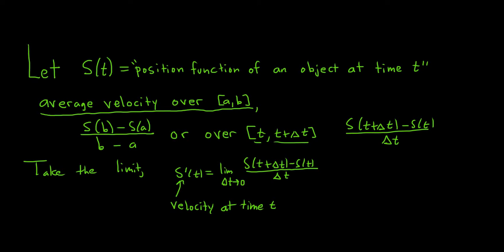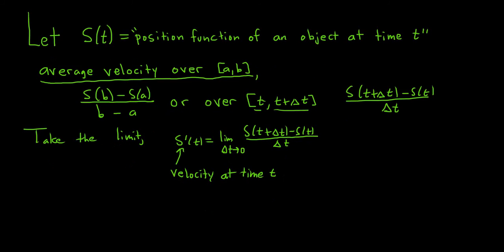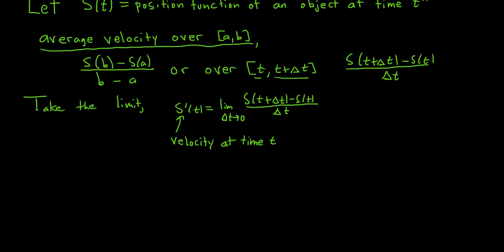We can give it a new name: v for velocity. So we say that s'(t) equals v(t), and that will be our velocity at time t.